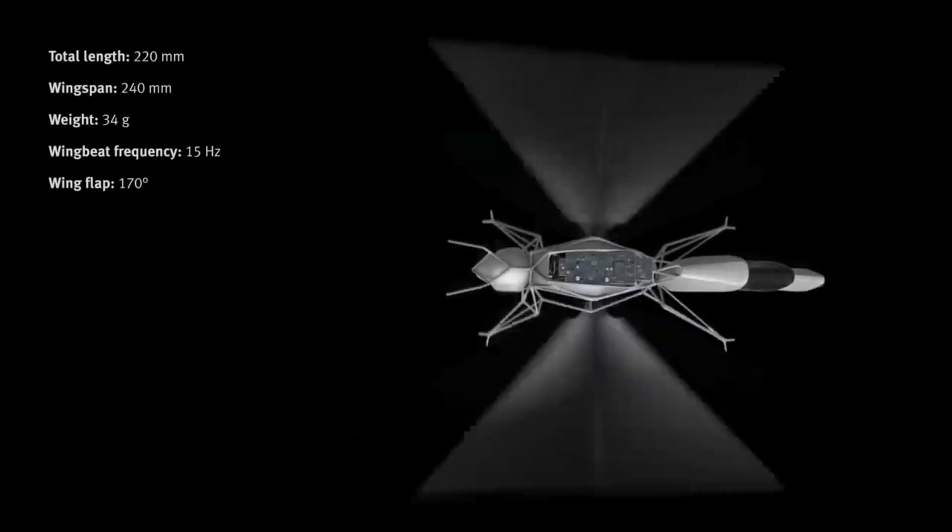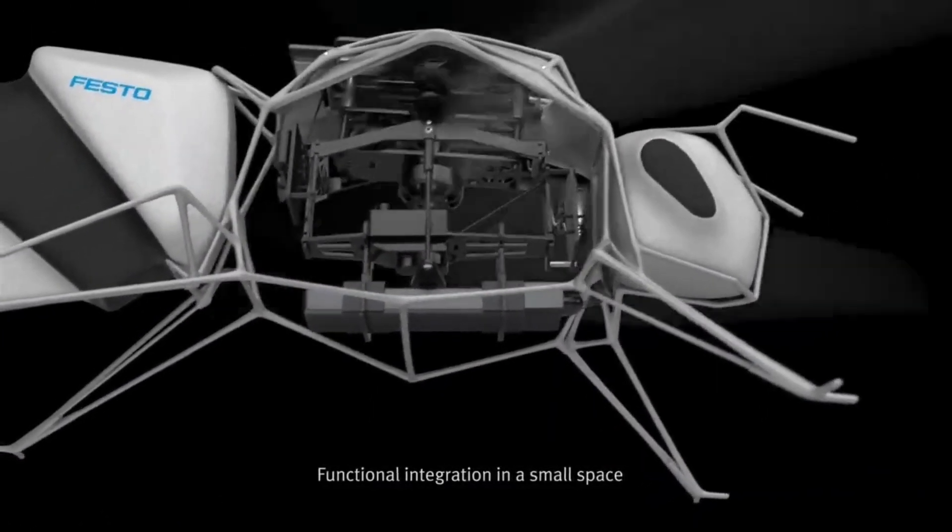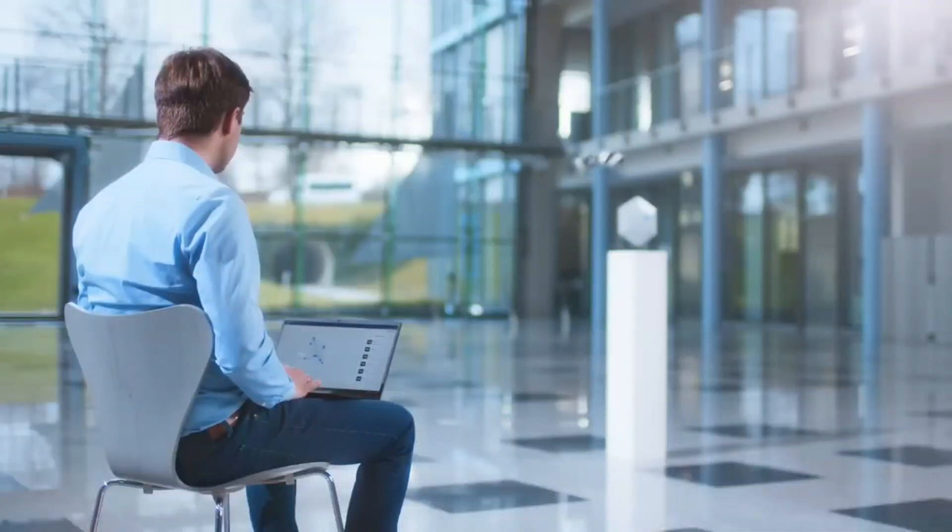Equipped with ultra-wideband anchors for localization and a central computer for swarm coordination, the Bionic Bee can navigate and fly in close formation autonomously without collisions.